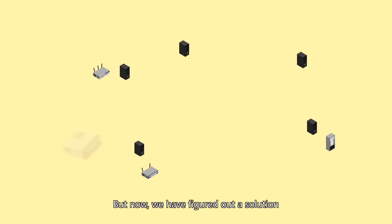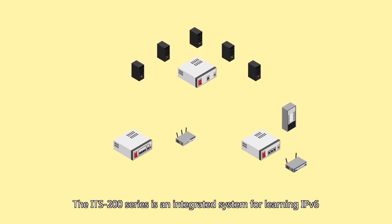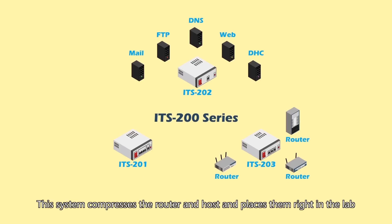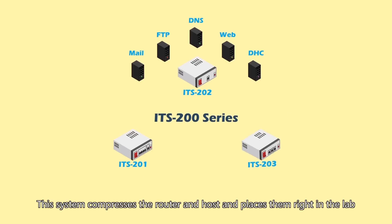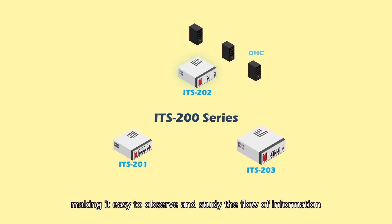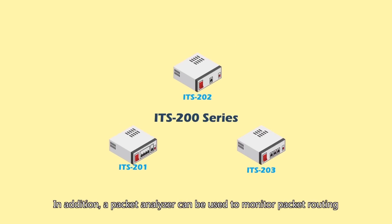But now we have figured out a solution. The ITS200 series is an integrated system for learning IPv6. This system compresses the router and host and places them right in the lab, making it easy to observe and study the flow of information. In addition, a packet analyzer can be used to monitor packet routing.